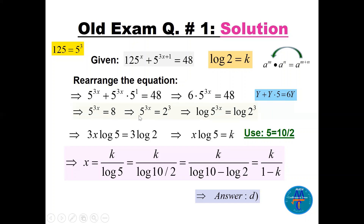So 6 times the quantity equals 48; dividing by 6 gives 8, which is 2 cubed. Since the bases are different, we take log of both sides. Using the laws of logarithms, 3x comes down: 3x times log 5 equals 3 times log 2. Log of 2 is given as k. For log of 5, we write 5 as 10 divided by 2, so log 5 equals log 10 minus log 2, which is 1 minus k.